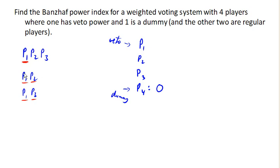Now what about player two and player three? Are they a winning coalition? Well, we know they're not, because if they were, then player one would not have veto power. And so these must be the only winning coalitions.